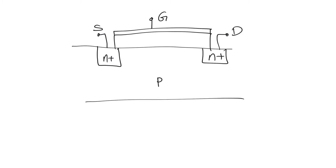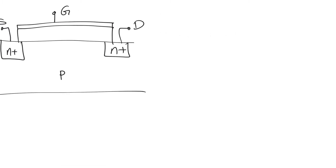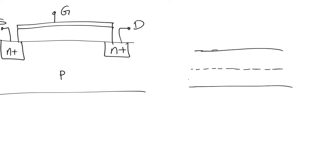The p-type body of the MOSFET, because it's p-type, has a Fermi level which is actually below the middle of the band gap. This distance between the middle of the band gap — the intrinsic Fermi level — and the actual Fermi level is related to the concentration of holes in the substrate, and is thus related to the doping we use in the substrate.